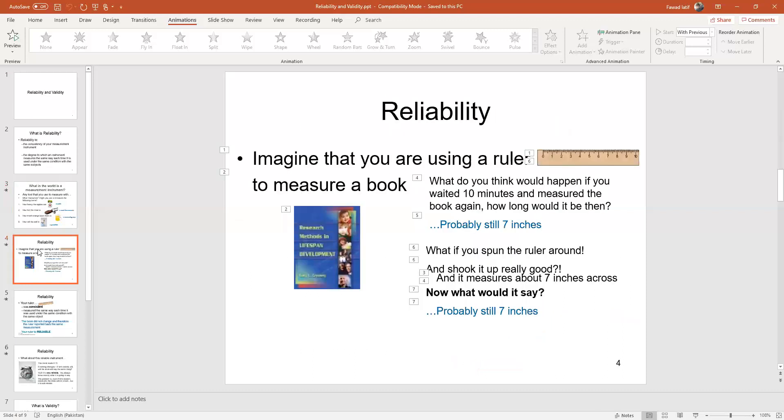So imagine that you are using a ruler to measure a book. The book will be of the same size no matter what happens. Even if you measure it after years, the size of the book won't change if you use the same ruler over and over again on the same book, so you are getting these consistent results.